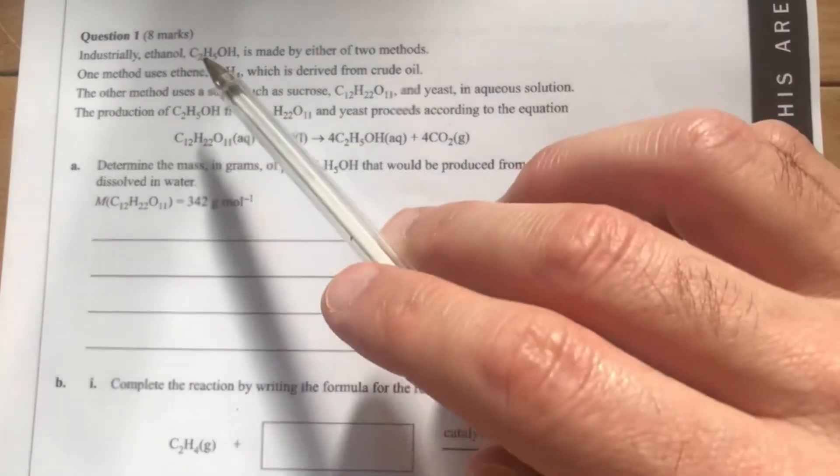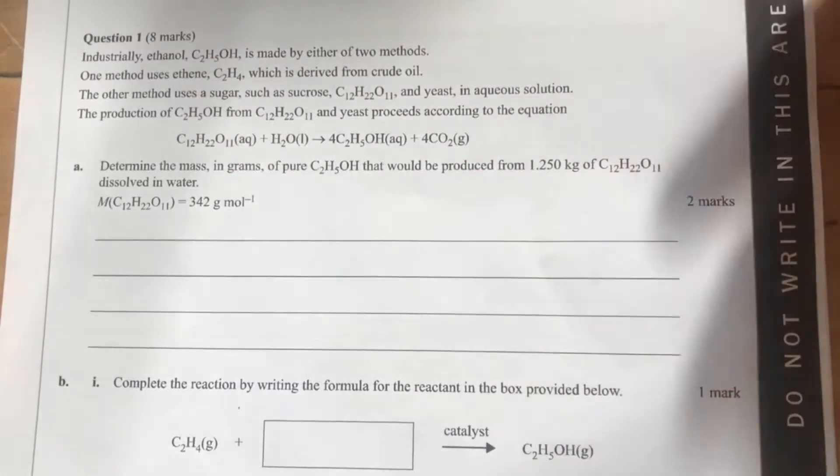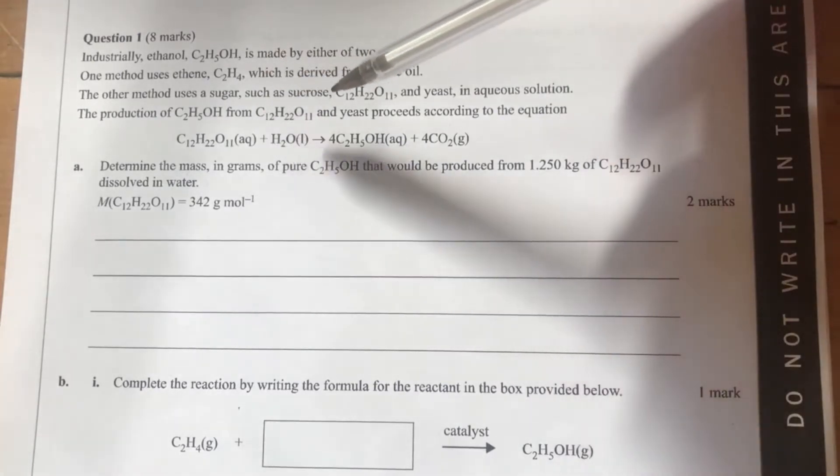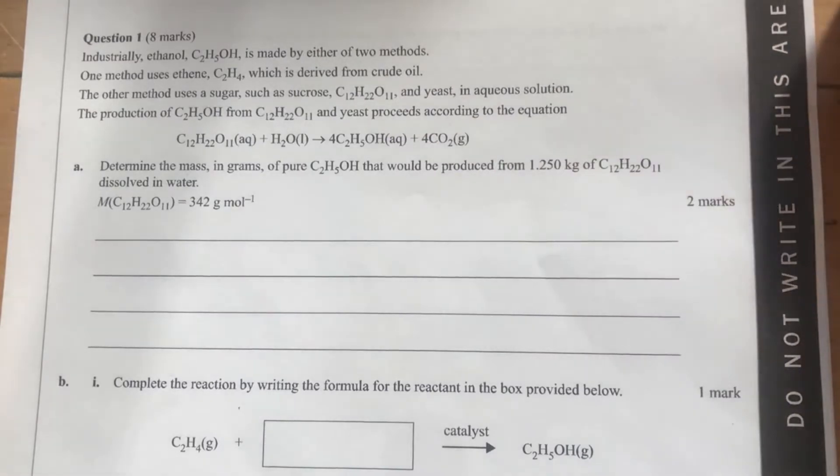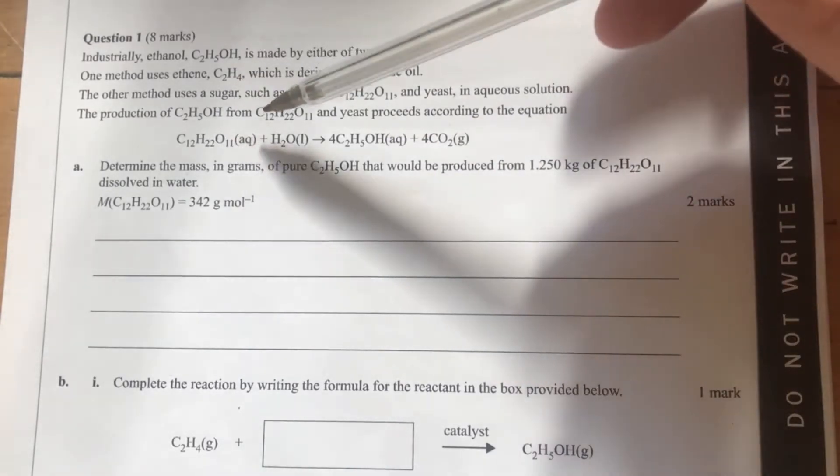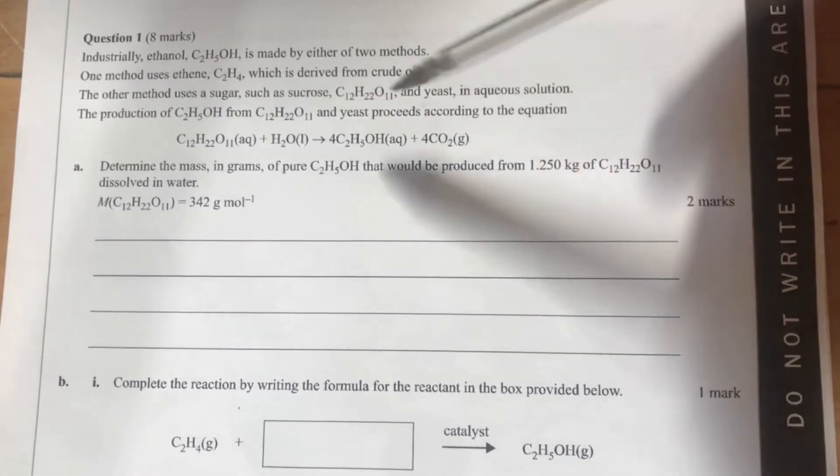I'm going to quickly glance through some of this stuff about making ethanol. So industrially, ethanol is made by either two methods. One method uses ethene, which is derived from crude oil. The other method uses sugar, such as sucrose with this molecular formula here, and yeast in an aqueous solution. The ethanol produced from sucrose and yeast proceeds according to this reaction here.